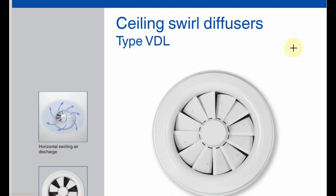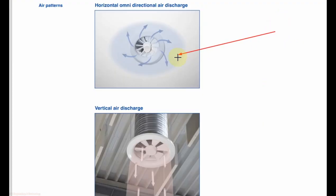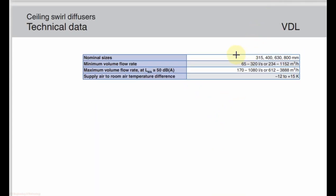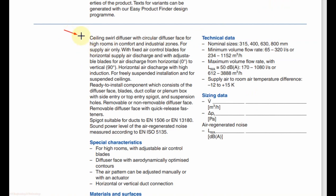Ceiling swirl diffuser is used for high areas like airports or malls. It has fixed and adjustable blades to control the air pattern. We can use it for horizontal flow pattern as well as vertical throw pattern. It can handle airflow starting from 65 liters per second up to 1080 liters per second. It comes with fixed horizontal blades and adjustable blades that can be adjusted from 0 degrees to 90 degrees vertical. You can adjust this angle as per your throw requirement.